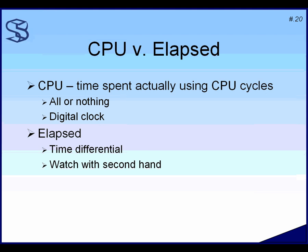Oracle tracks CPU time and elapsed time separately. CPU time is all-or-nothing — if you're on the CPU when its clock ticks, you get credit for that full cycle. It's like a digital clock: if it says 11:27, you don't know the exact seconds. Elapsed time is like a watch with a microsecond hand. In trace files, CPU time values tend to appear as multiples of ten thousand — that's how Oracle keeps track rather than counting exact CPU seconds.